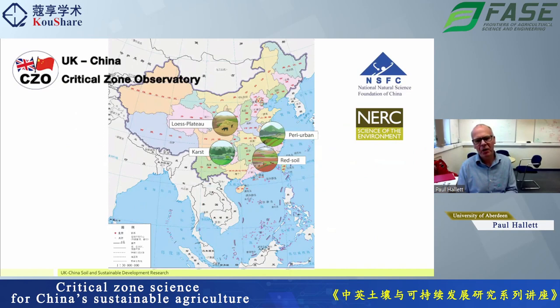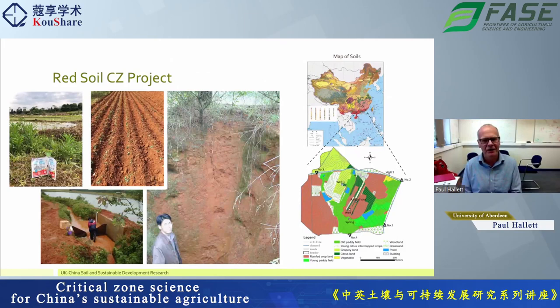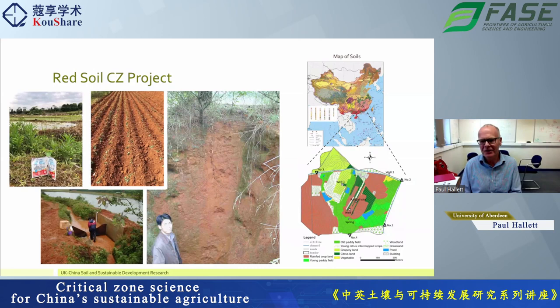Within China, there were five projects funded in four different geographic regions going from the northwest down to the southeast. The one that Ganlin and I were involved with was the Red Soil CZ project. The picture of a big soil profile with a person in it is 20 years old — it's actually Professor Xinhua Peng when he was a PhD student. It reflects how long some of these collaborations have been going on. We weren't new partners; we've known each other for a long time.